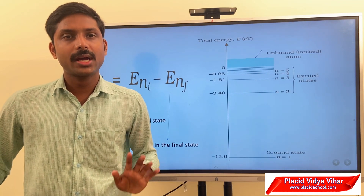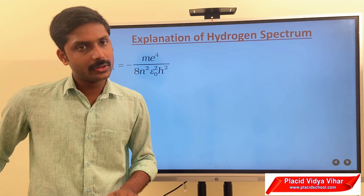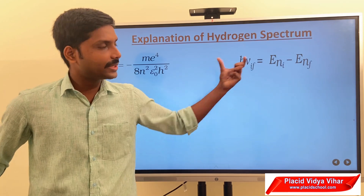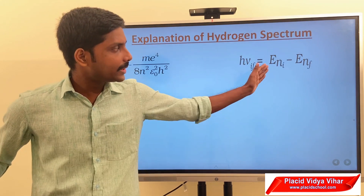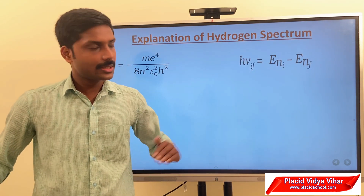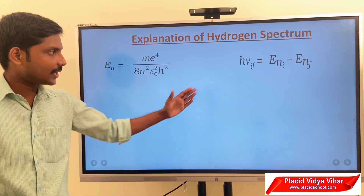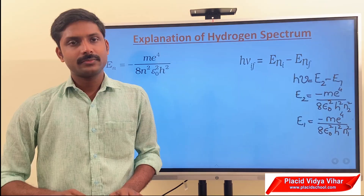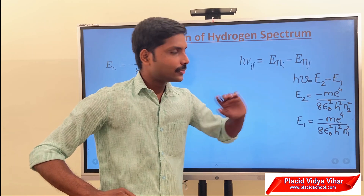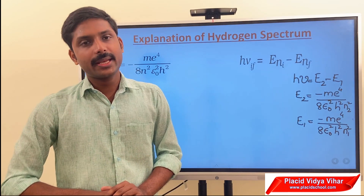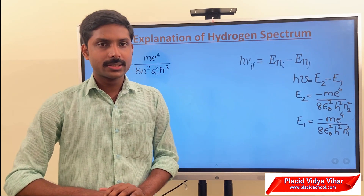This is what gave a good understanding about the hydrogen spectrum. The energy of an electron in the nth orbit is known, and according to Bohr, the energy difference during a transition is h-nu equal to E-ni minus E-nf. Here h is Planck's constant and nu is the frequency. We modify this equation as h-nu equal to E2 minus E1, where E2 is the energy in the initial state and E1 is the energy in the final state.